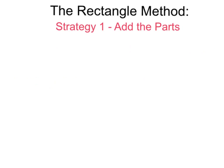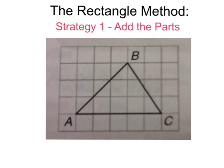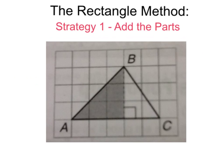Let's look at the Rectangle Method, Strategy 1: Add the Parts. The easiest way to use this method is to find the area of a right triangle, because the formed rectangle will be divided into two congruent triangles. The area of one of these triangles is one-half the area of the rectangle. Looking at Triangle A, B, C — it is possible to split the triangle into two parts that are right triangles. Here you can see two right triangles inside one triangle. We are going to find the areas of the two parts and add them together to get the total area of the figure.